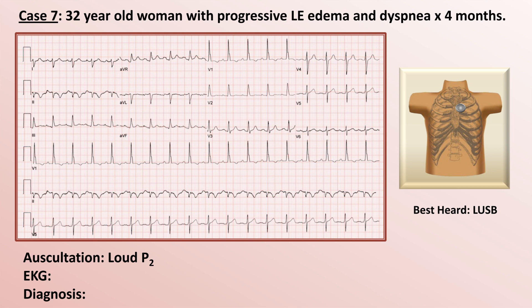The most notable single finding on the EKG is the very prominent R wave in V1 with an almost inverse R wave progression. The combination of right axis deviation, possible right atrial enlargement, and a very prominent R in V1 is highly suggestive of right ventricular hypertrophy. Putting together four months of edema and dyspnea, a loud P2 on auscultation, and RVH on EKG: this patient has pulmonary hypertension.